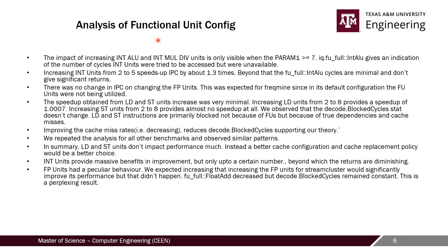We varied the functional unit configuration for our out-of-order CPU model and observed interesting behaviors. The impact of integer ALU and integer multiply/division units is only visible when the window size is greater than or equal to 7. For lower window sizes, the instructions fed into the IEW stage are insufficient to take advantage of varying unit counts. By varying the units from 2 to 5, we observed a speedup in IPC of around 1.3. For Freqmine and other benchmarks, changing the floating point units did not significantly change the IPC.